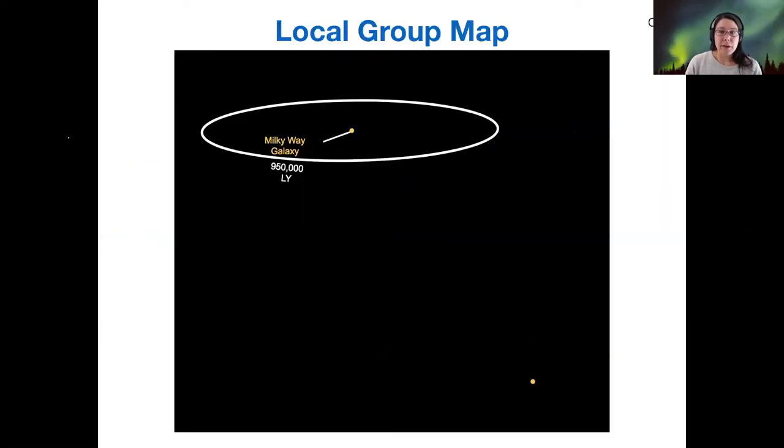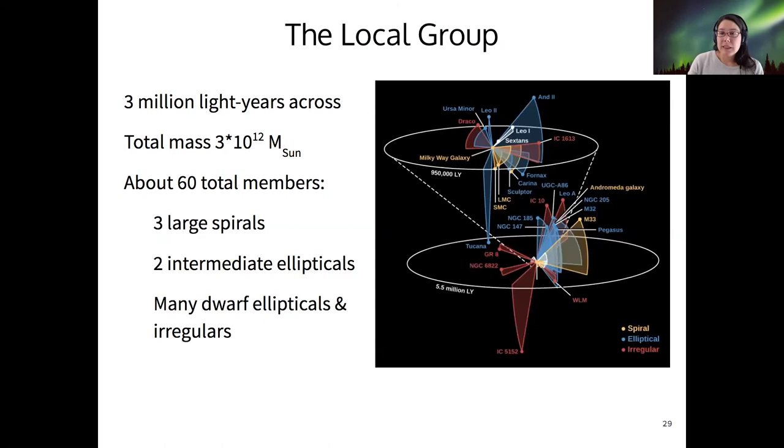Let me skip that for now. There is this map of the local group in your book, but I want to walk through it one piece at a time because I find this figure to be extremely confusing.